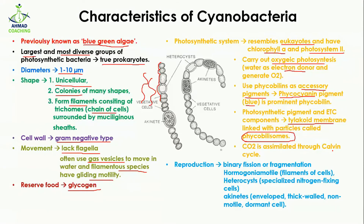Carbon dioxide is assimilated through the Calvin cycle, so during the photosynthesis process the Calvin cycle takes place and carbon dioxide is used. When we talk about reproduction, cyanobacteria reproduce by binary fission or by fragmentation. In binary fission, the cell divides into two after division of their DNA. In fragmentation, cell fragments are shed from the body and each fragment grows into a new organism.